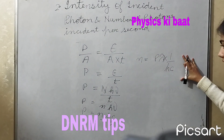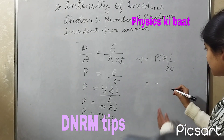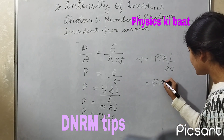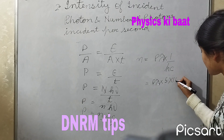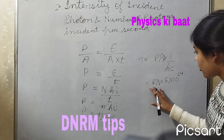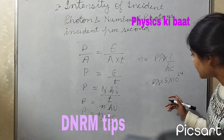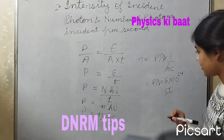The value of 1/hc can be replaced, giving n = Pλ × 5 × 10²⁴. Here, all the variables are in SI units. Thank you.